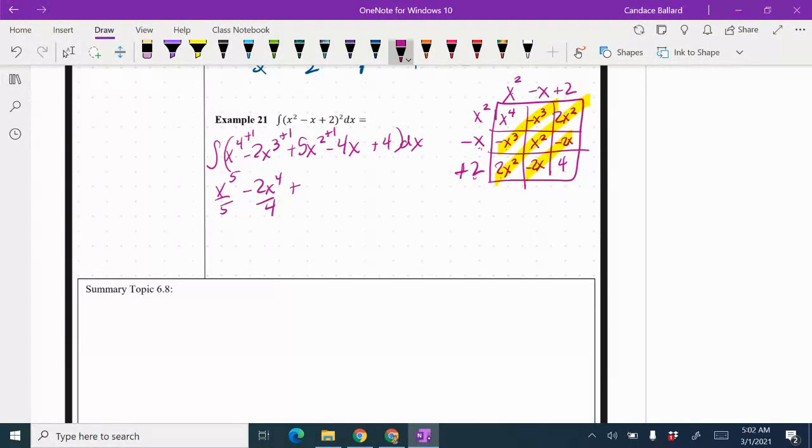Add one. We get plus 5x cubed divided by 3. This is a 1. We're going to add one. So minus 4x squared over 2 plus 4. Remember we just add an x and then plus c.